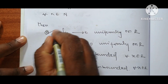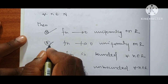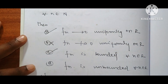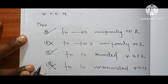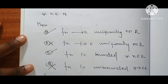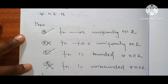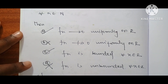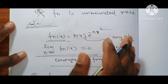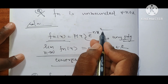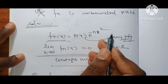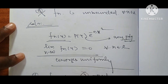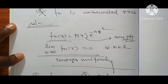So uniform convergence is true, non-uniform is false, bounded function is true, and unbounded is false. Therefore options A and C are correct. If you consider the x² case moving to x², you can see the answer confirms this.